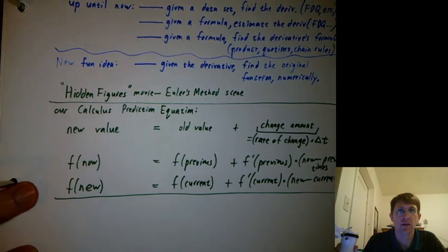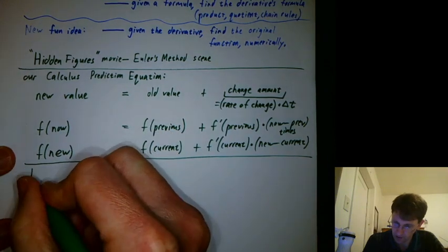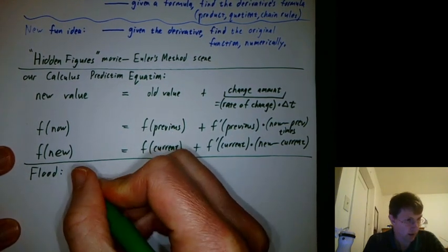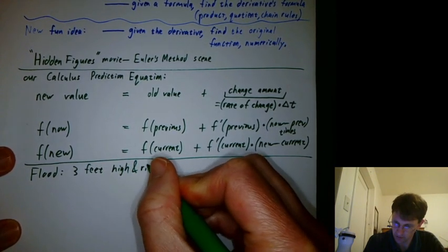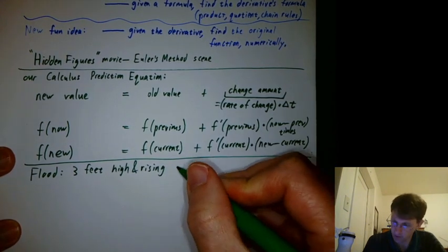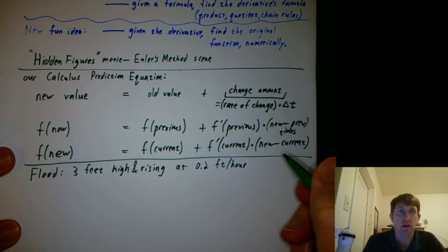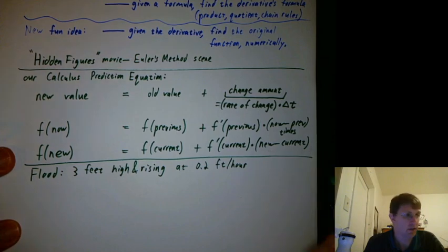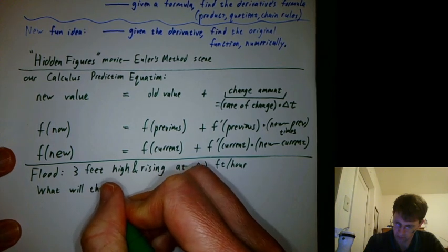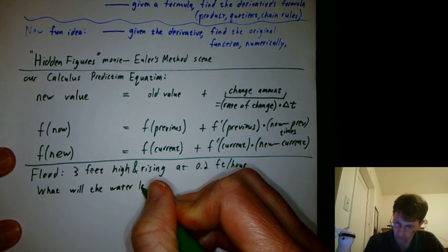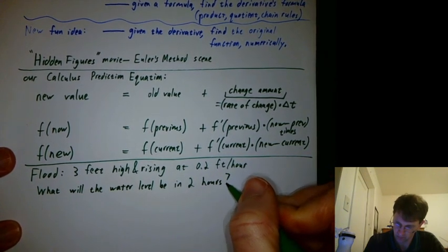So, let's apply this to a fairly straightforward case, and then we'll get fancy. Here we go. Let's say there's some kind of a flood, and the waters are three feet high and rising. And let's say they're rising at 0.2 feet per hour. So, what will the water level be in two hours?